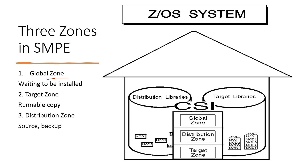The next one is the target zone. Each CSI can have multiple target zones. These zones describe the content of the target libraries. This zone holds the runnable copy of the operating system components.